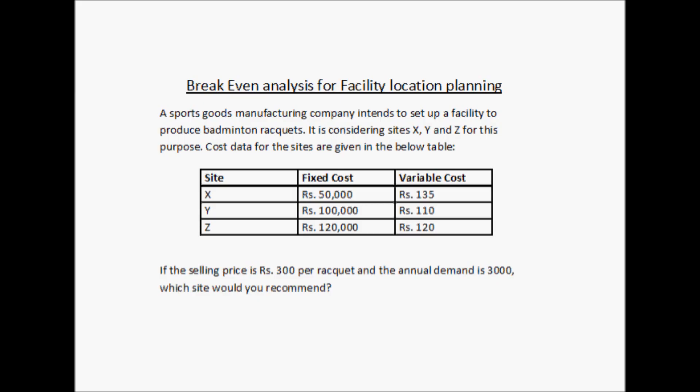Cost data for the sites are given in the table below. So three sites X, Y, and Z. The fixed cost is given as rupees 50,000 for X, rupees 100,000 for Y, and rupees 120,000 for Z.